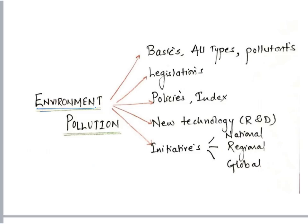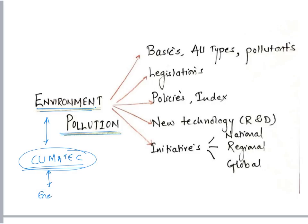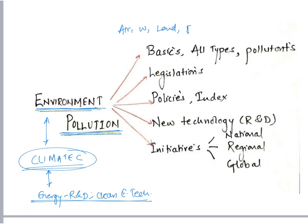When studying environmental pollution, this aspect is getting more dynamic and is directly linked to climate change. When studying climate change, one should also have an idea about the various research and development going on in the clean energy technology sector. When studying environmental pollution, divide it into multiple topics: first know all types — air, water, land, e-waste, and solid waste — then know what the pollutants are.